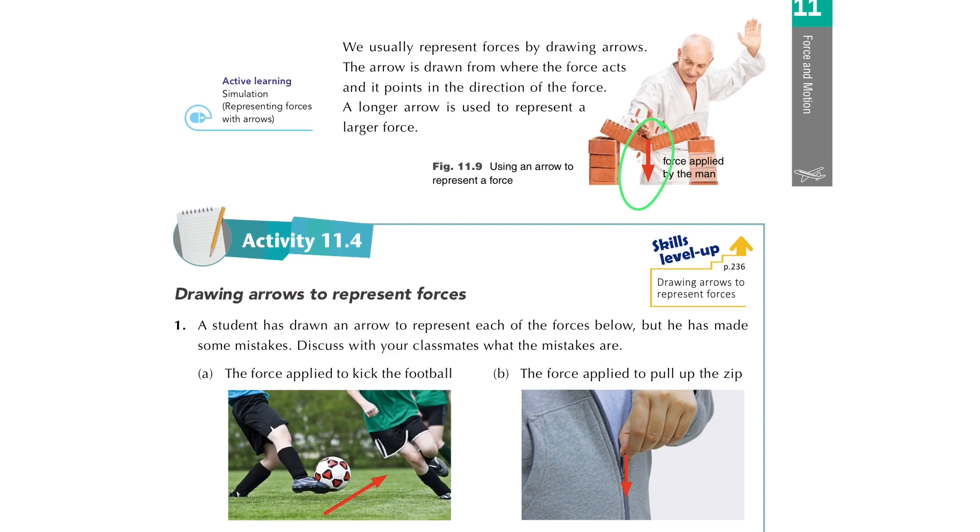Let's consider the activity here. You can see there are two arrows marked on the diagram. Can you find what mistakes were made here?